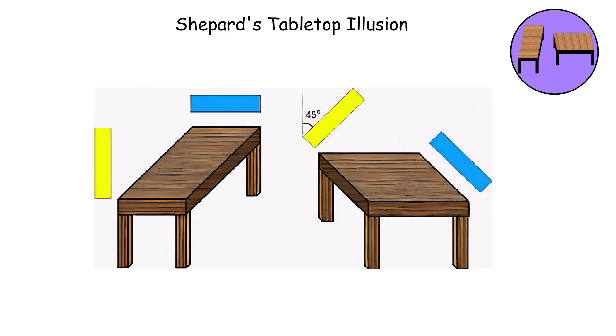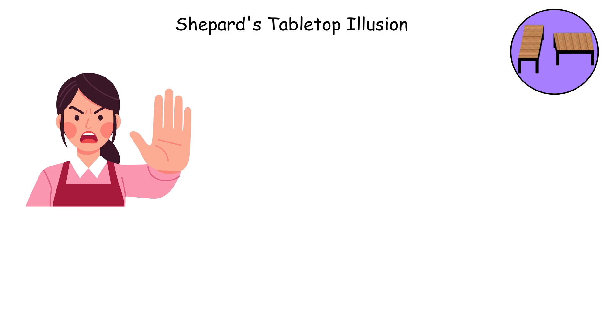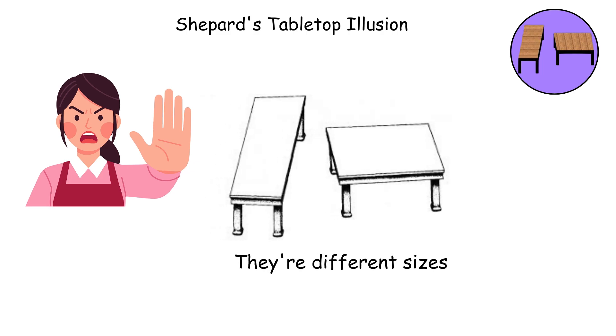Even after measuring them and proving they're the same, your eyes will still insist they're different sizes, and no amount of logic will convince your visual system otherwise.